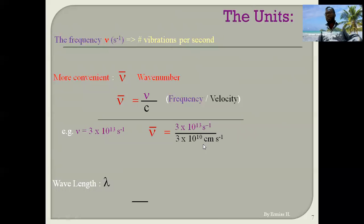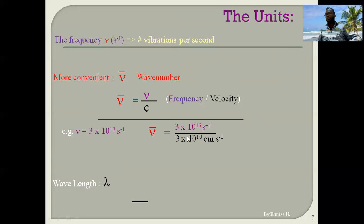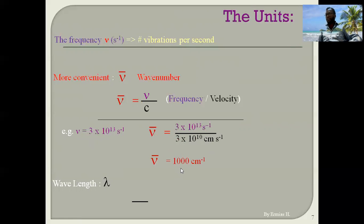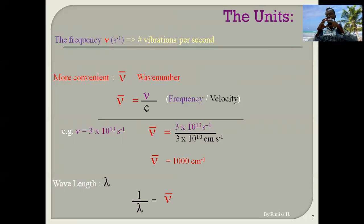There is a simple mathematical relationship: given a frequency of 3 × 10¹³ cm⁻¹, dividing the frequency by the speed of light gives the wavenumber, which comes out to approximately 1000 cm⁻¹. There is an inverse relationship between frequency and wavelength.